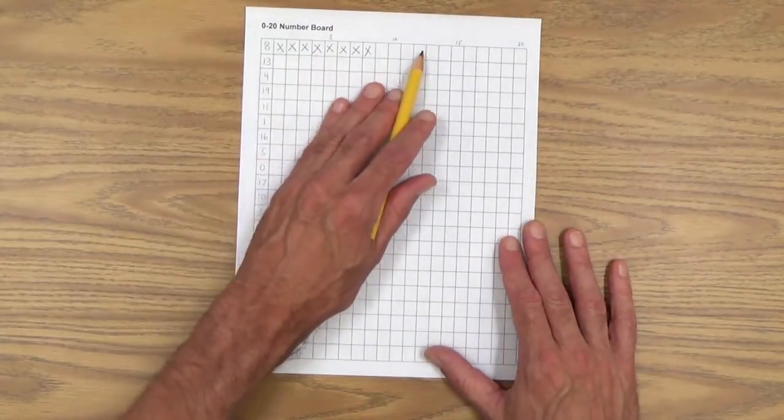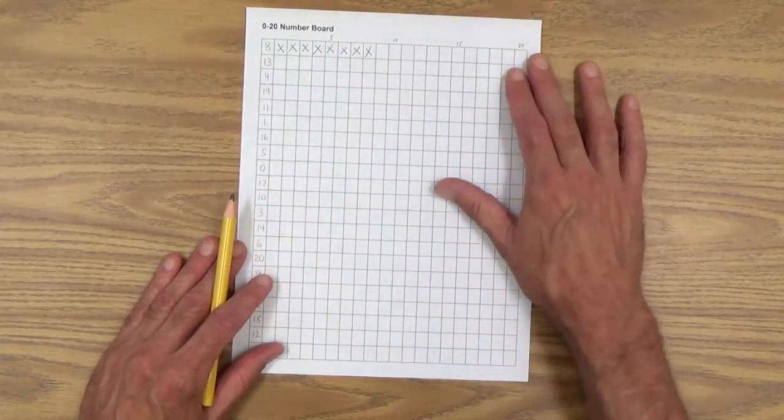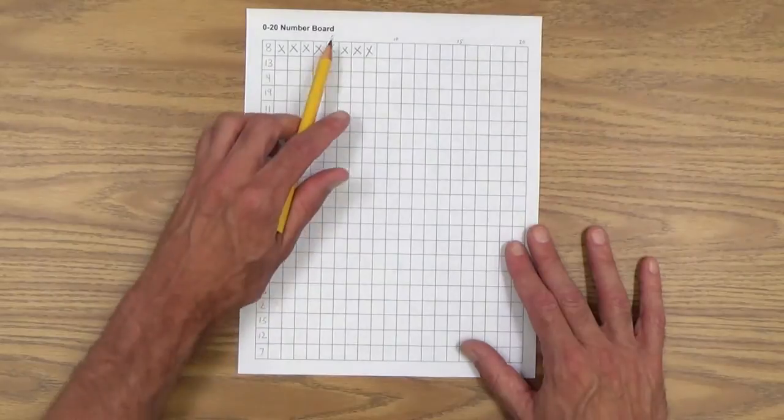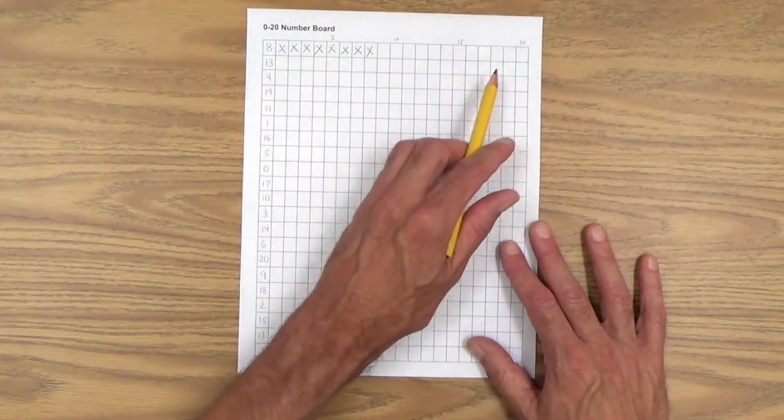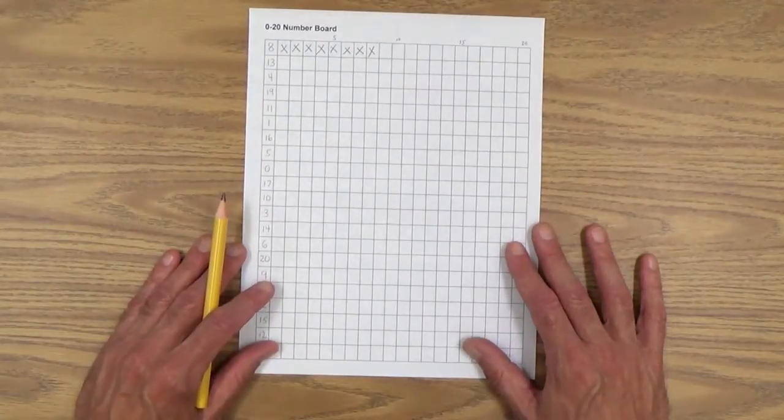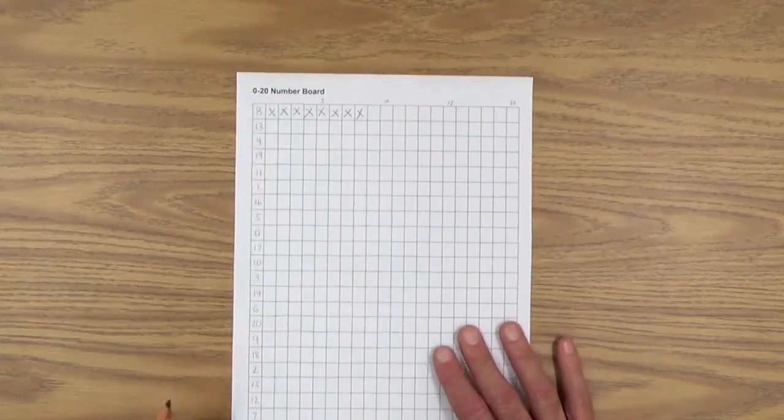And of course, maybe you don't want him to see you doing that. It's just for you when you correct the page. But some kids are smart and might actually figure this out, that if they number these, that'll make their job a lot easier. But of course they can do that.